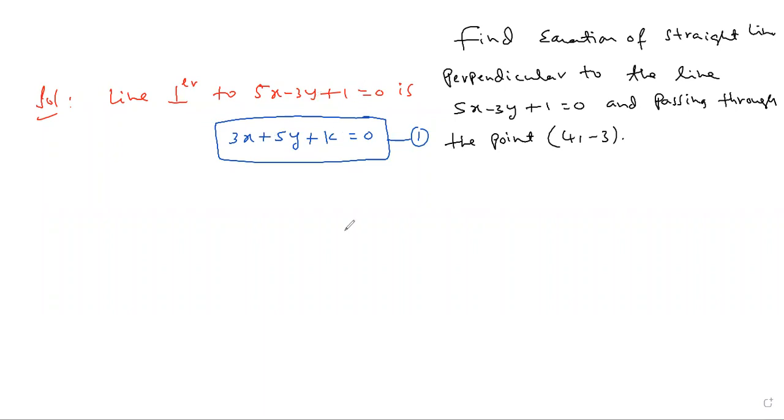Now this is passing through the given point. Equation one passing through 4 comma minus 3.